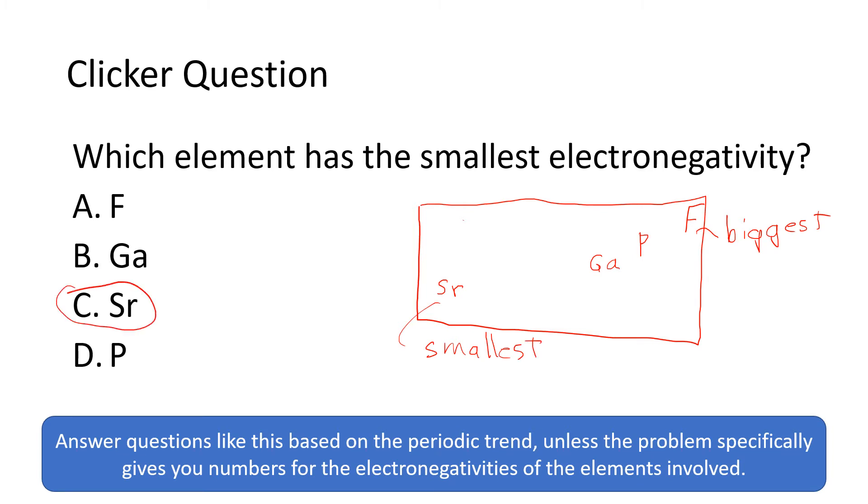If we were asked to rank these, strontium would have the smallest electronegativity followed by gallium, then phosphorus, then fluorine. If we were asked to go from biggest to smallest, we would say that fluorine has the biggest electronegativity followed by potassium, then gallium, and finally strontium. So those are the ways that these types of questions typically get asked.